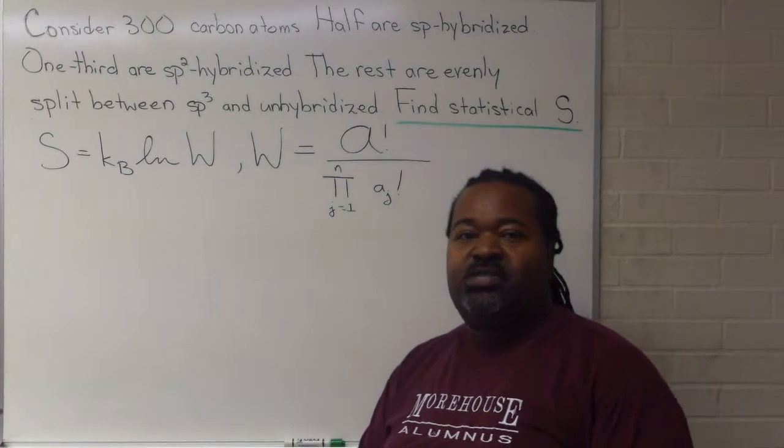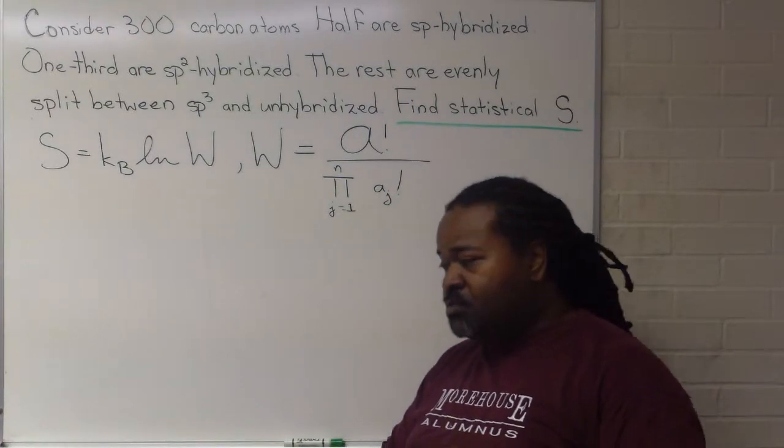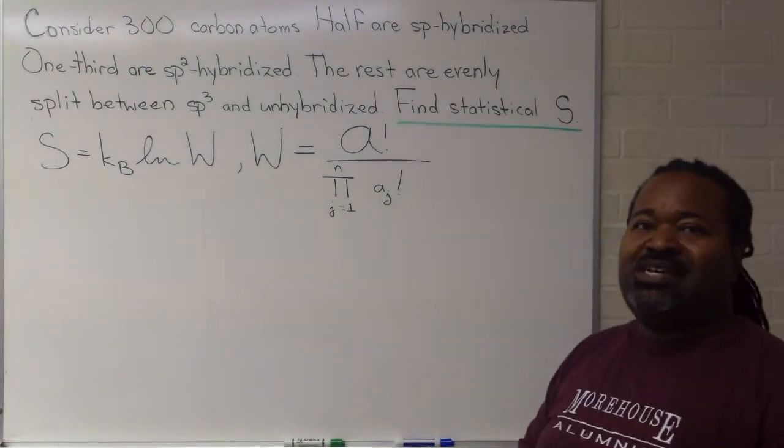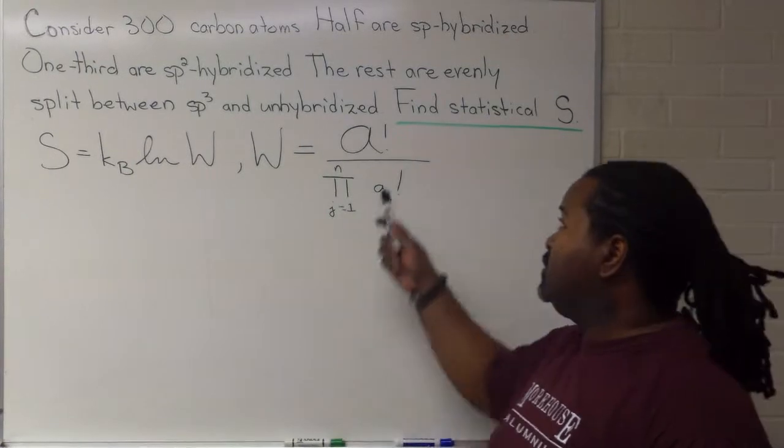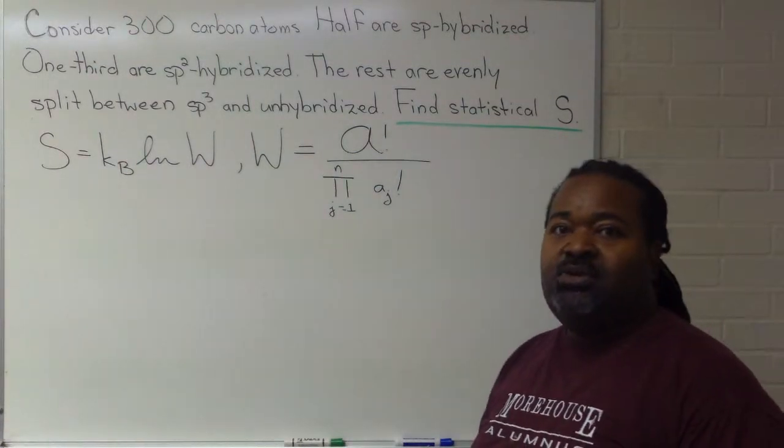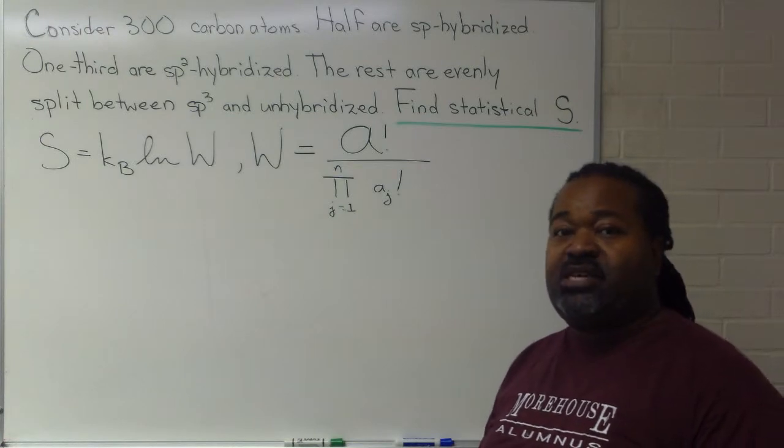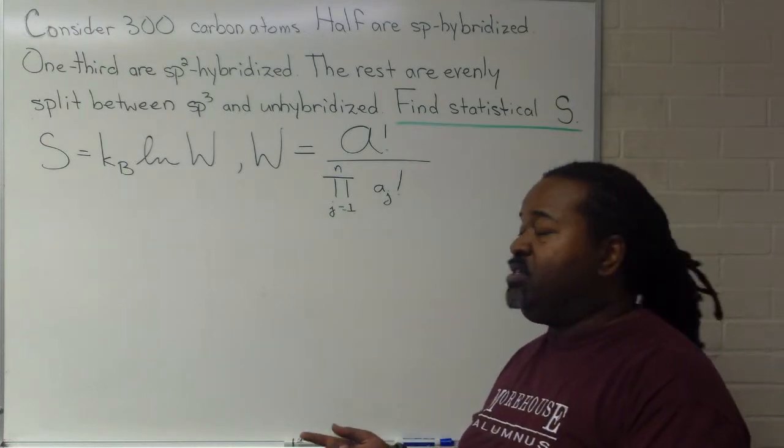Now, in order to write out an expression for this, we have to do three things. First, we'll need to identify the number of particles in our system. That's going to be script A. We'll need to identify the number of states these particles can go into. That gives us a value for N.